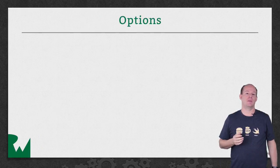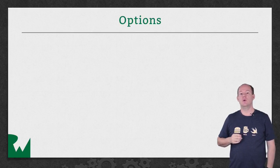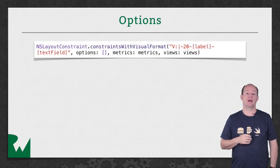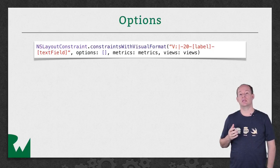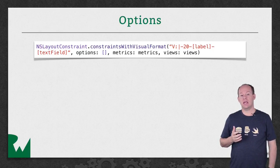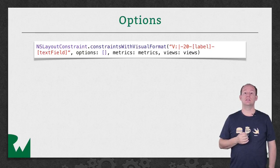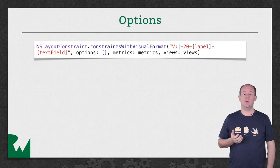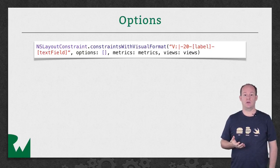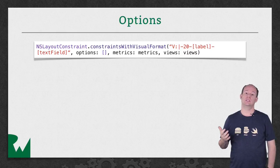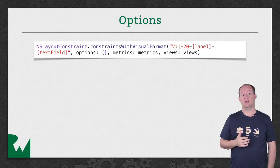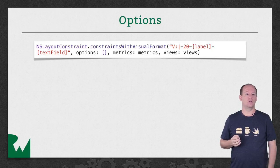Let's take a look at the rest of the parameters when creating constraints with a visual format. After the visual format string, the next parameter is NSLayoutFormatOptions. NSLayoutFormatOptions is an option set type, meaning you can pass in an individual value, use the set syntax for an empty set, or multiple values. If you're used to using bitwise OR, you'll have to convert to this set syntax.